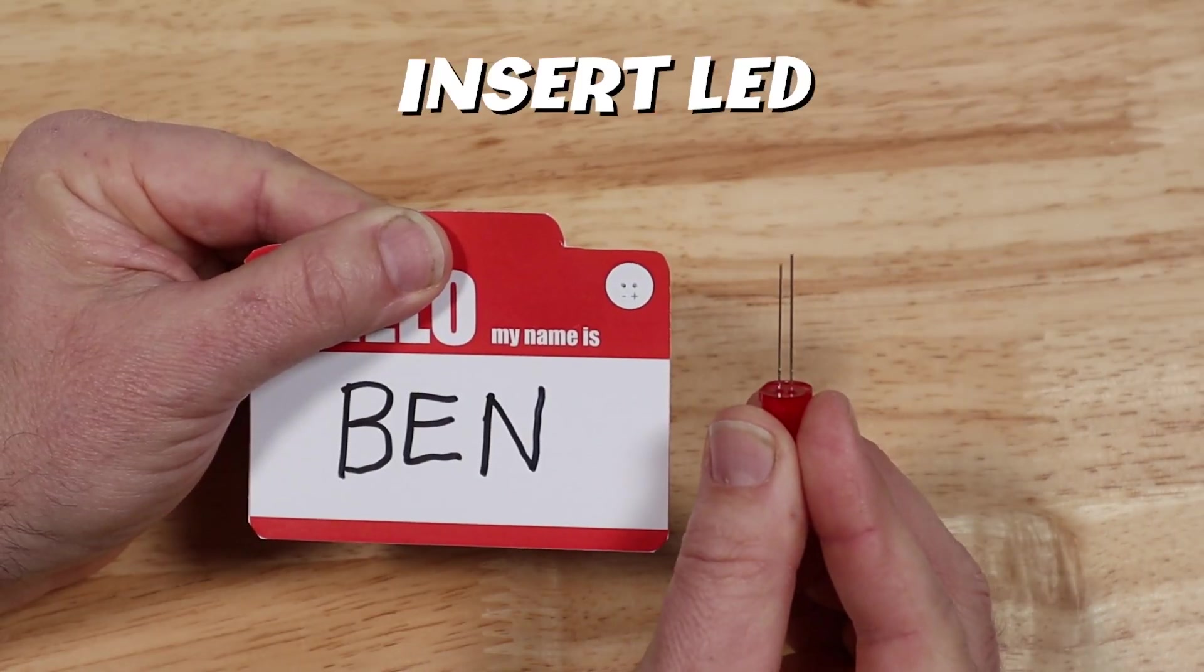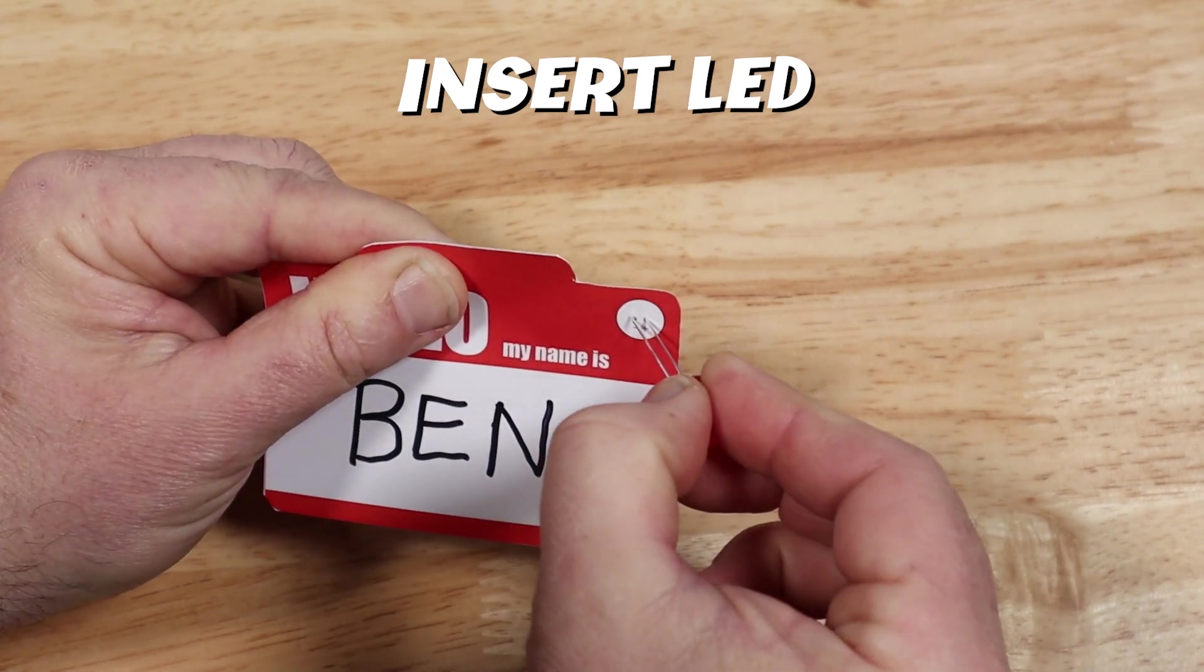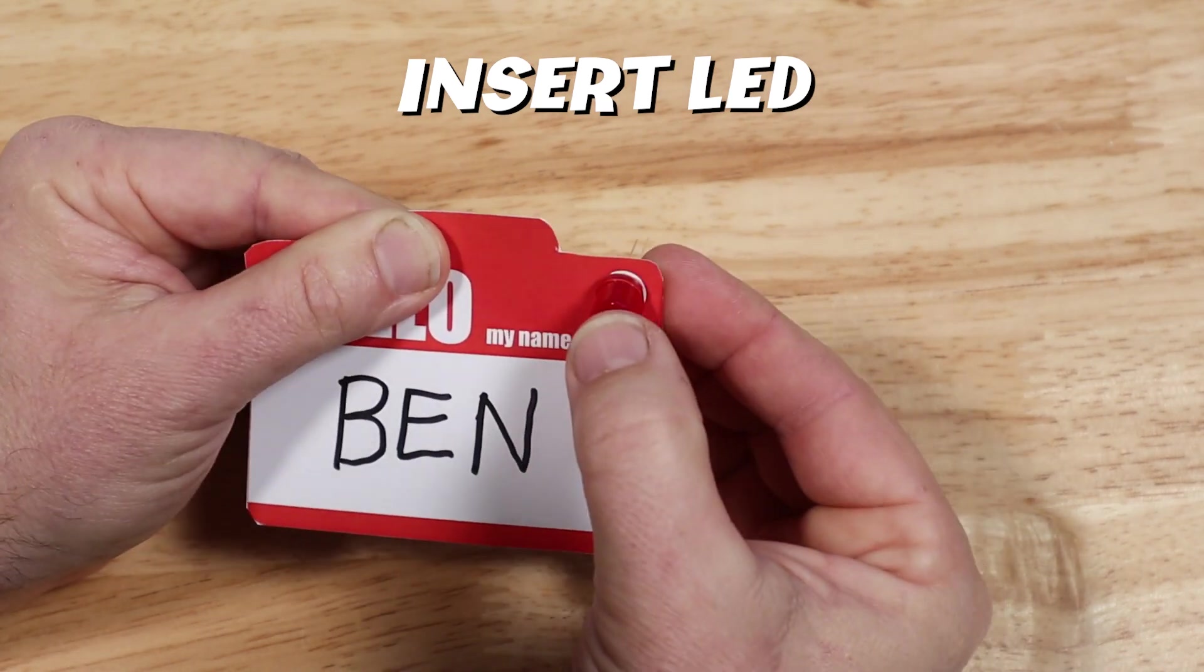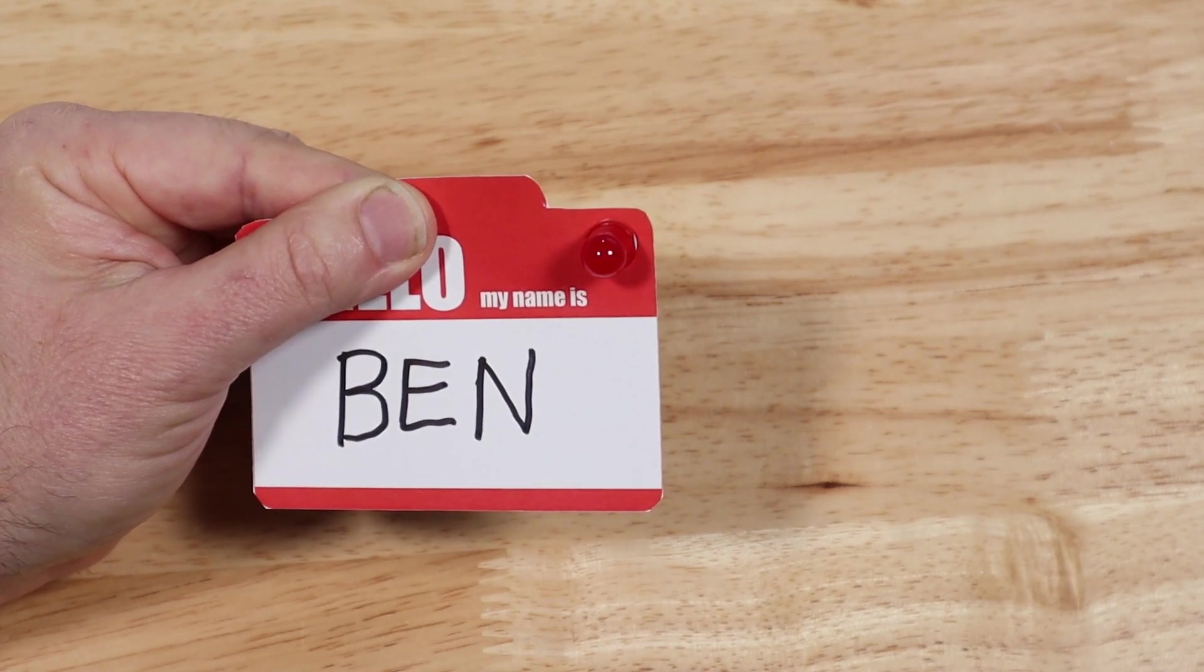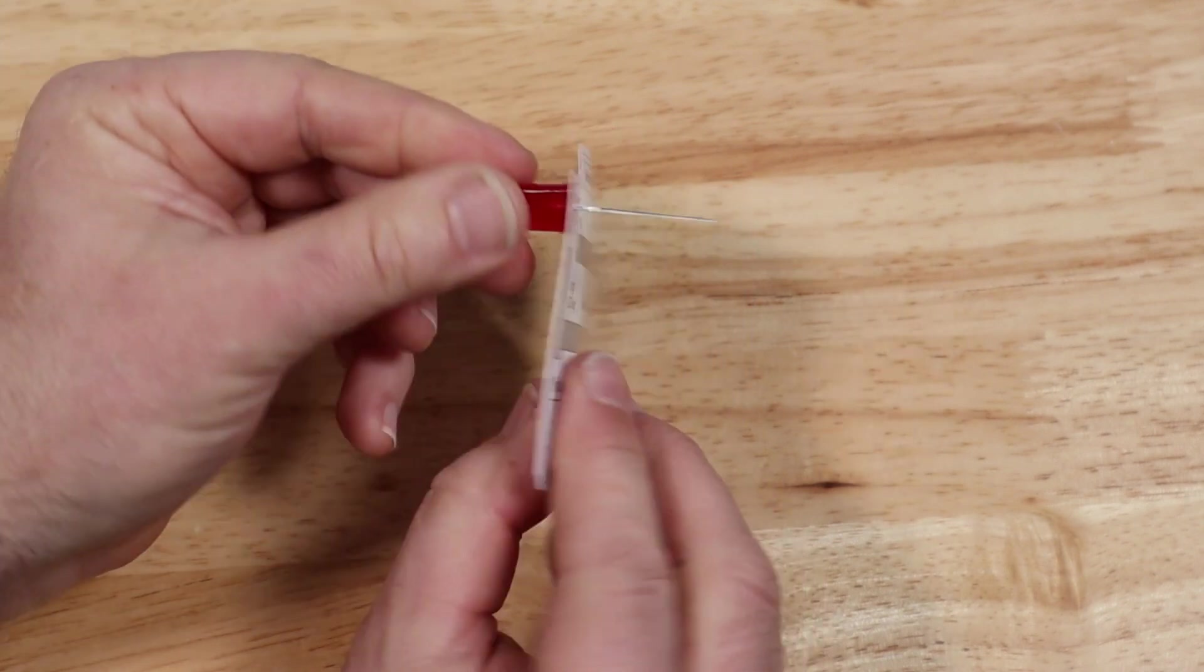Next, insert the LED. Make sure that the longer of the two LED legs goes through the right hole, or the one closer to the outside edge of the name tag. Make sure that the LED is pushed in all the way. Then flip the name tag over.